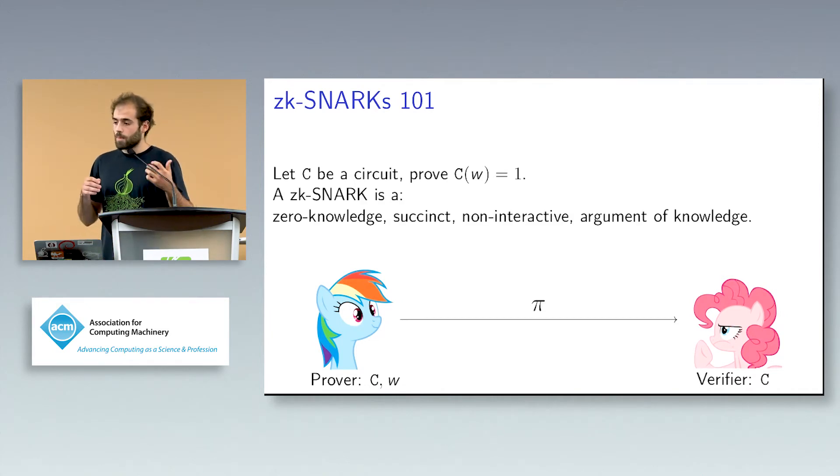The proof is in turn taken by the verifier, together with the statement again the circuit C, and the verifier can decide if the proof was convincing or not. So ideally we would like the proof to be in some sense sound and the prover not to leak a lot of information about the witness W, this valid input.